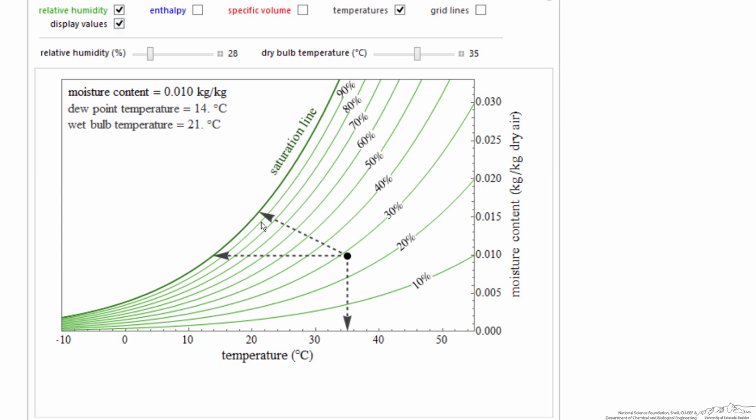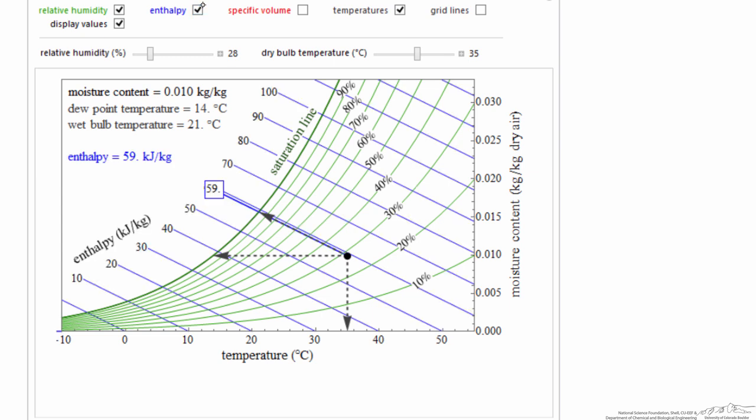So the wet bulb temperature is 21 degrees, that's something I can measure. Dew point is 14 degrees, and the wet bulb temperature corresponds fairly closely, not exactly, but that's what we're going to approximate as along a constant enthalpy line.